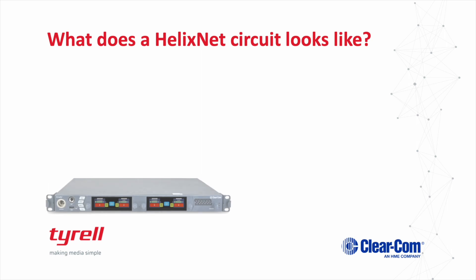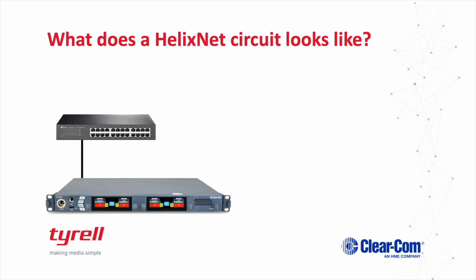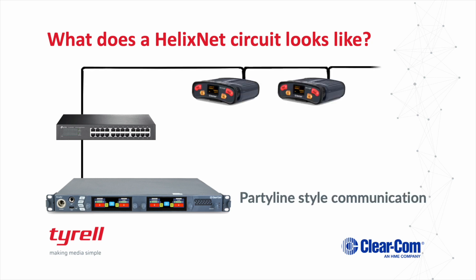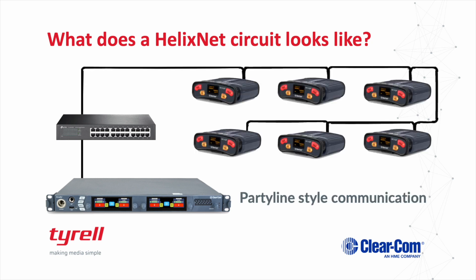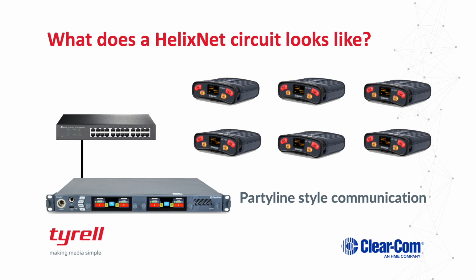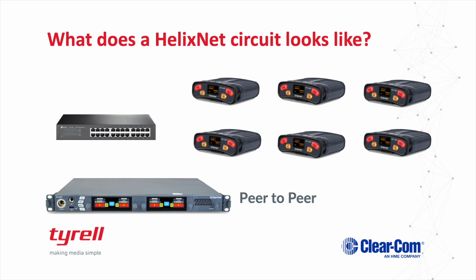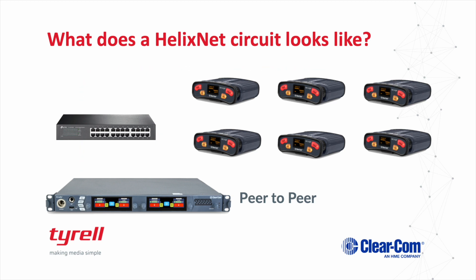So what does a HelixNet circuit look like? We can use either a standard 2-wire infrastructure to create the network, or we can move to Ethernet and utilize the network switch for distribution and connection points. And due to HelixNet being digital, it can incorporate both party line and peer-to-peer types of communication. So we get the familiarity and instant accessibility of party line, where everybody on the line can talk and listen all at once, or the 4-wire peer-to-peer style of communication, where we can set up discrete channels for not only the main station to the belt packs, but also for the belt packs to communicate to one another directly. And this is the beauty of HelixNet, where all the different types of infrastructure and communication can be used all at once, leading to some very complex and creative workflows.